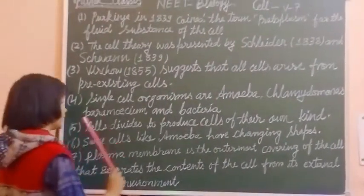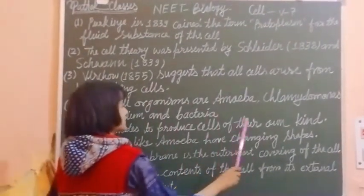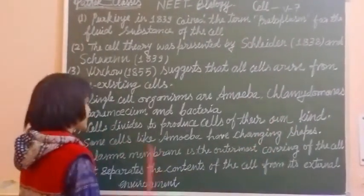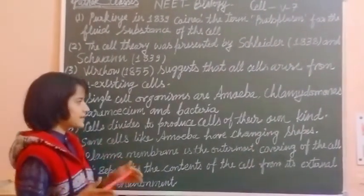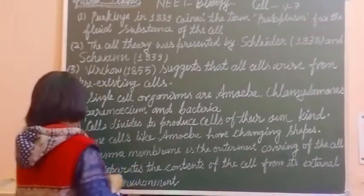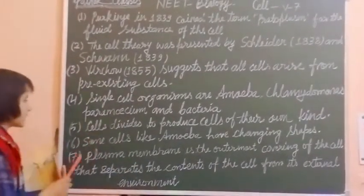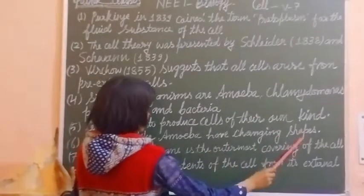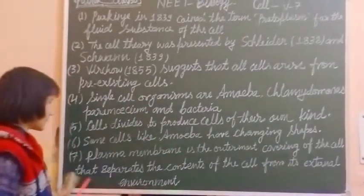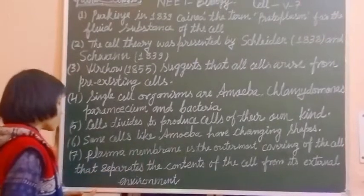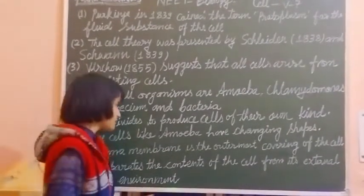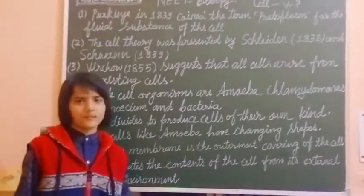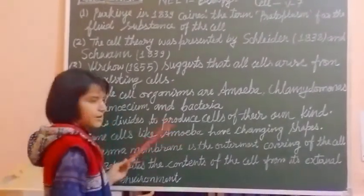Next, fifth point. Cells divide to produce cells of their own kind. Sixth point: some cells like Ambeva have changing shapes. There are some few cells which are like Ambeva and they have a changing shape — they can change their shape like Ambeva.